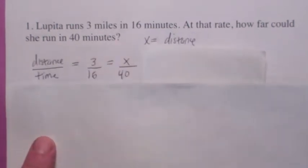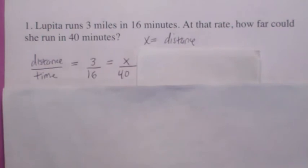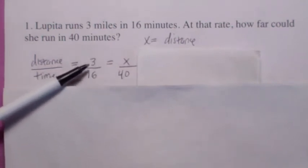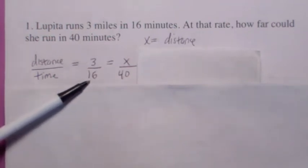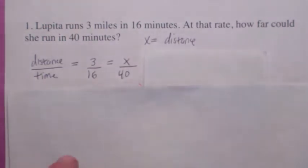We're going to set up the ratio like this. Put the distance on the top and the time on the bottom, and as long as you're consistent, the proportion will be true. The distance traveled 3 miles over 16 minutes would equal how many miles over 40 minutes? Again, we set it up this way because we want to have the variable on the top. It's easier to solve that way.